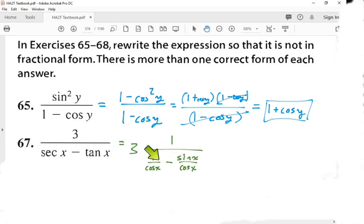Now I can subtract these. What does it look like? We have the three. On the bottom, we have a one on top, and on the bottom, we have one minus sine x divided by cosine x.